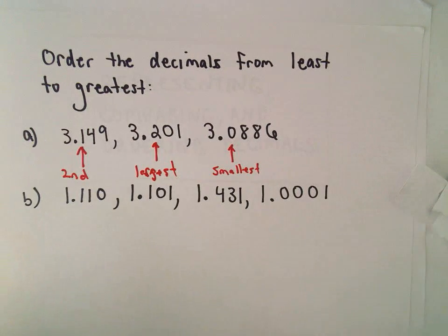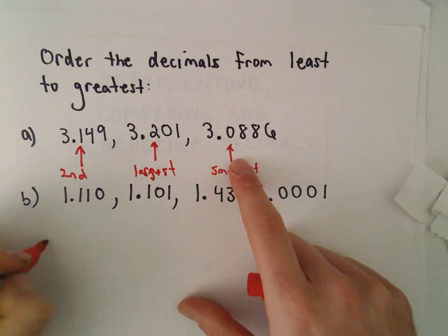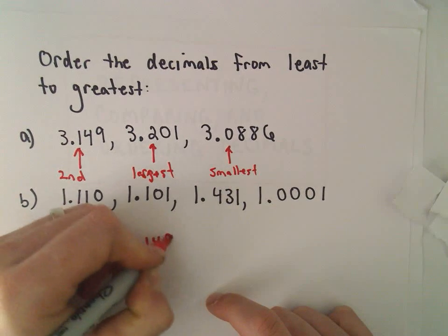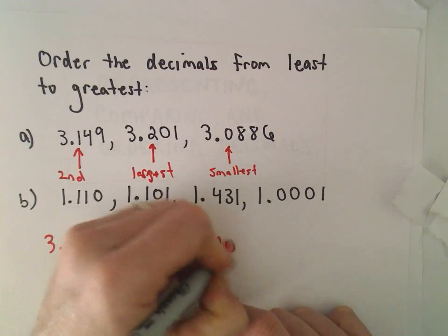So all right, I've got them listed now. So we would have 3.0886, then 3.149, and then 3.201.